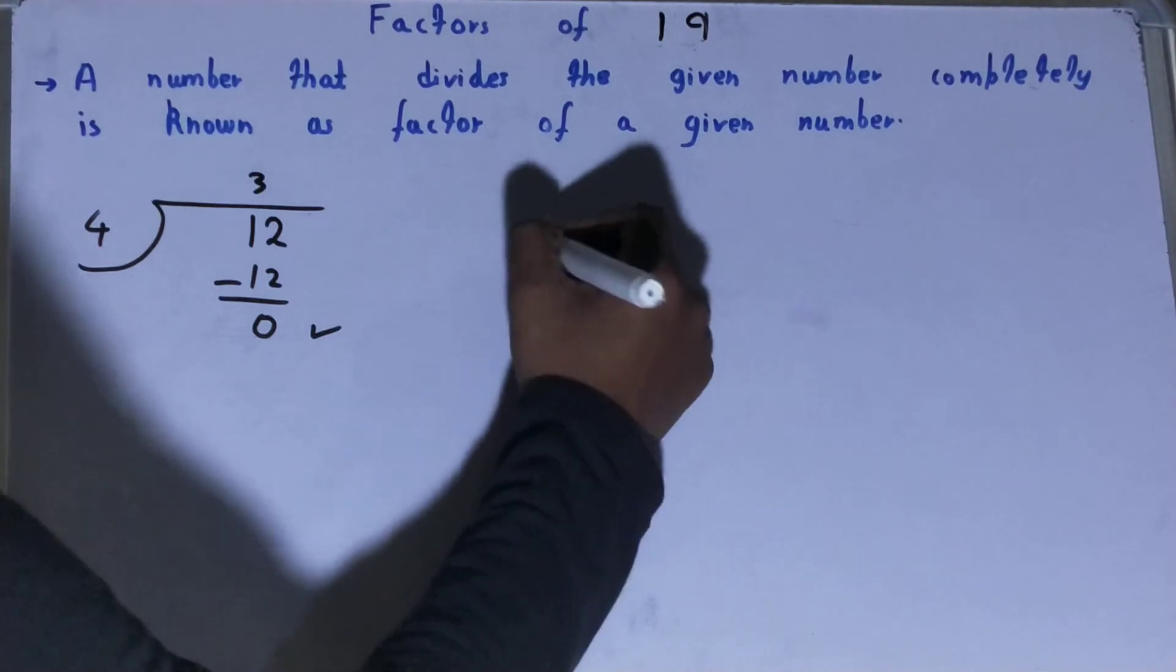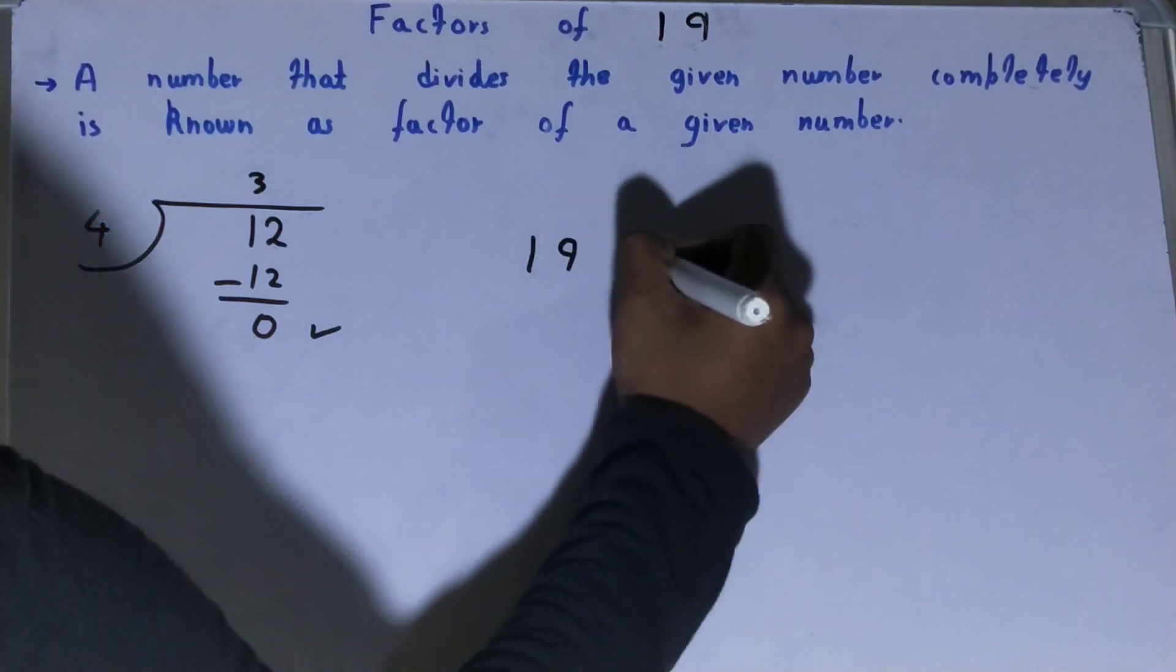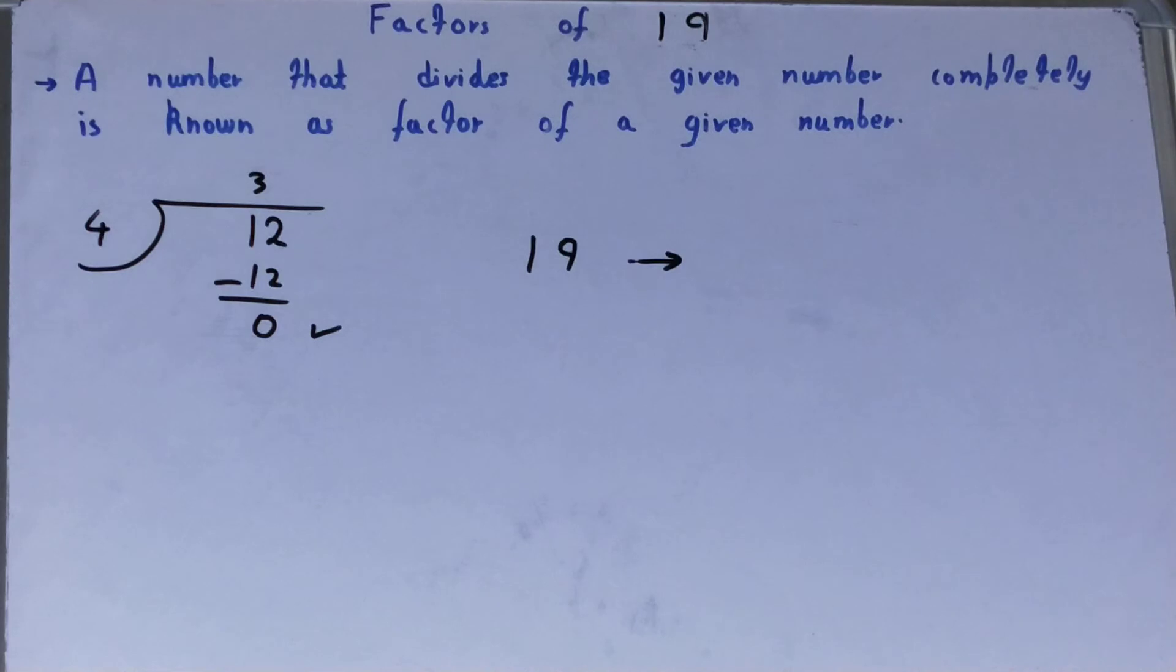What are the factors of the number 19? The easiest way to find out the factors is to first see whether the number is a prime number or a composite number. The number 19 is clearly a prime number.